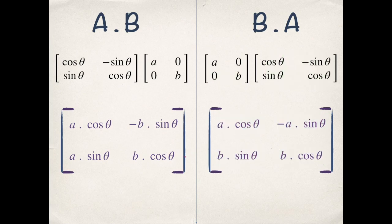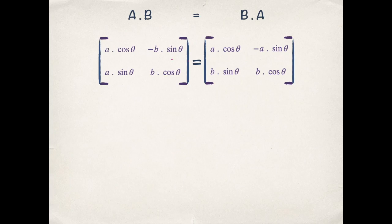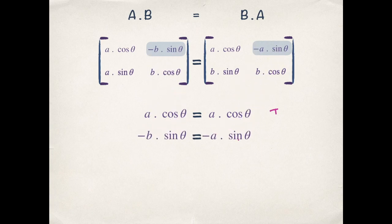Now that we have both the matrices, next step is to equate them. Two matrices are equal if their corresponding elements are equal. That is a cos θ equals to a cos θ which is always true. Minus b sin θ equals to minus a sin θ.